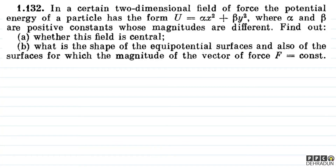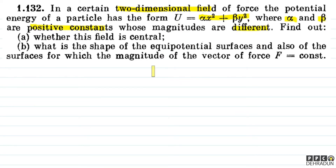Let's try to understand the question. There is a certain two-dimensional field, meaning x and y. We have u = αx² + βy², and α and β are positive constants with different magnitudes.